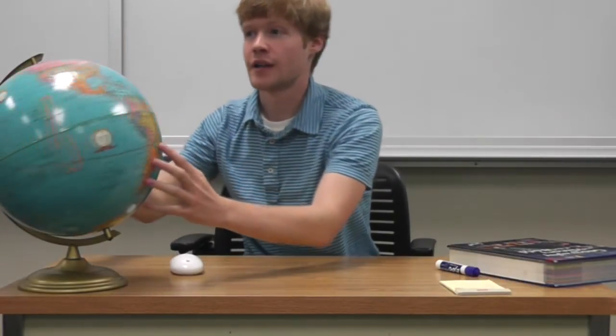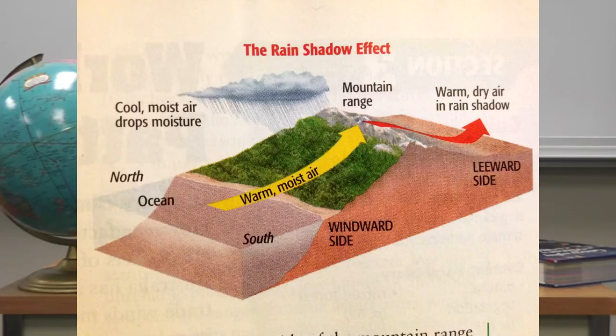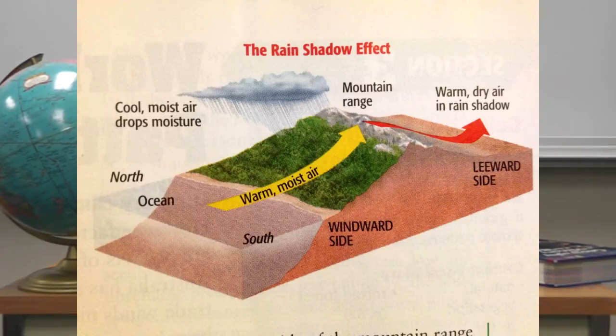Landforms also affect the climate of a particular place. Climates of places at the same latitude can be very different — for example, Chicago versus Idaho — because the natural features of a place differ, such as large bodies of water like Lake Michigan. Mountain ranges can cause a rain shadow effect, where the windward side of a mountain receives a lot of rain and the leeward side receives very little. Wind carrying moisture hits the mountain, dumps precipitation on the windward side, then crosses over without water to dump — which can cause a desert on the leeward side.